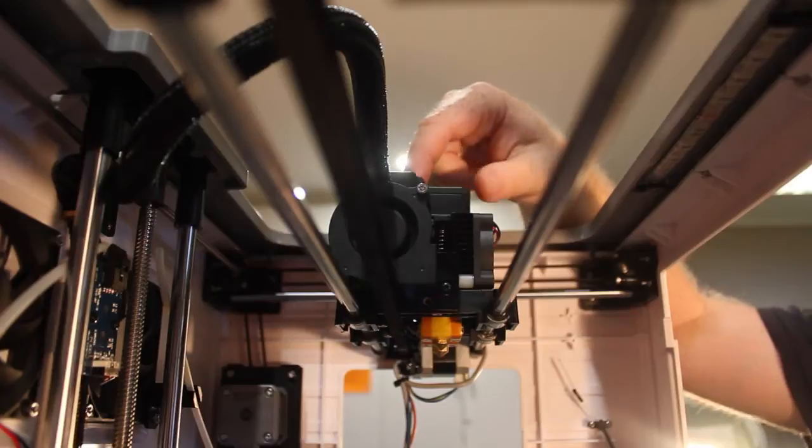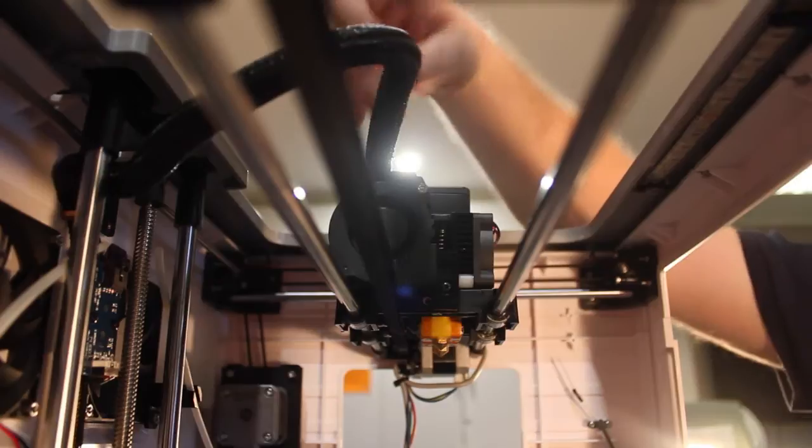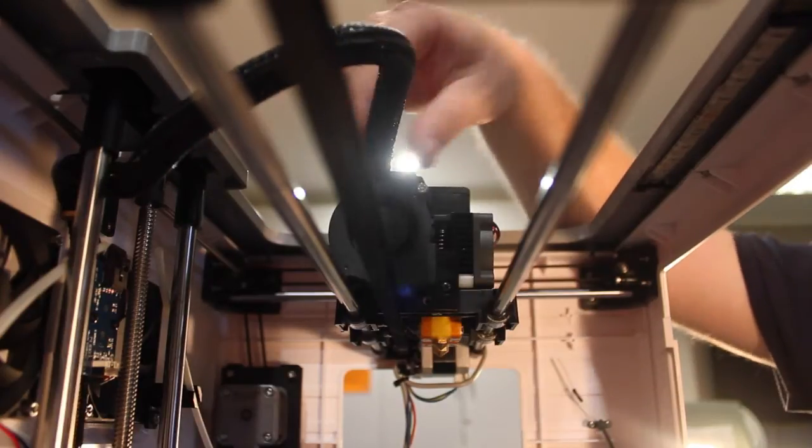Before you screw the extruders on, make sure that this cable isn't all twisted up. It needs to be a fairly smooth transition in a nice loop.